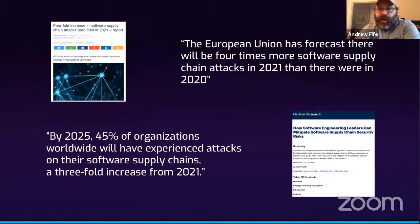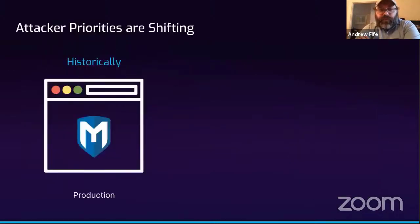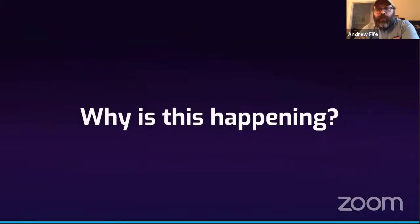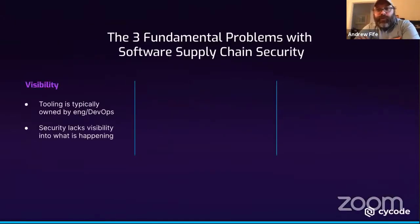That's where the Google SALSA framework comes in — it's an approach to how we should handle this, because it's an area many organizations hadn't really dealt with in the past. The big change occurring is that in the past, attackers were primarily going after production applications, but now they're actually going after the tools that make up your CI/CD and software delivery pipelines.